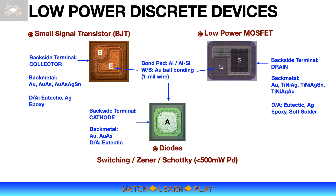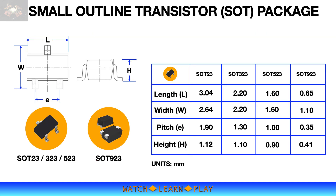Common die-attach method for gold back metalized devices is eutectic process, while other back metalization is suitable for soft solder, eutectic, and silver-filled epoxy die-attach process. Most low-power discrete devices, such as small signal transistors, switching diodes and rectifiers, have chip size of approximately less than 0.5 square millimeters, and power dissipation of less than 500 milliwatts, which makes them suitable for small, tiny packages.